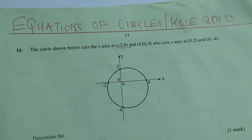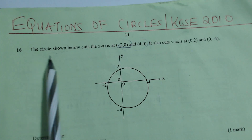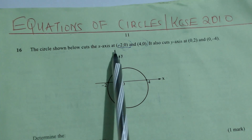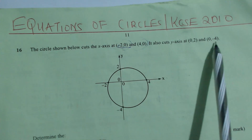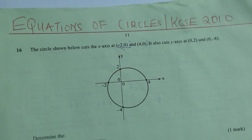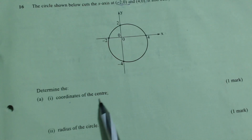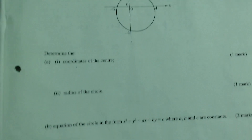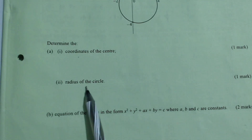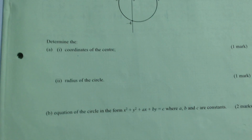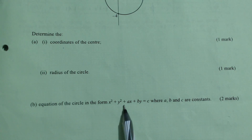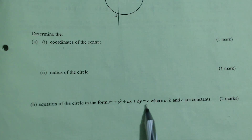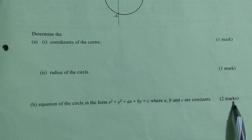Equations of Circles. KCC 2010 Question 16: The circle shown below cuts the x-axis at negative 2, 0 and 4, 0. It also cuts the y-axis at 0, 2 and 0, negative 4. Determine: Part A1 - the coordinates of the center (one mark); Part A2 - the radius of the circle (one mark); and Part B - the equation of the circle in the form x² + y² + ax + by = c, where A, B and C are constants (two marks).